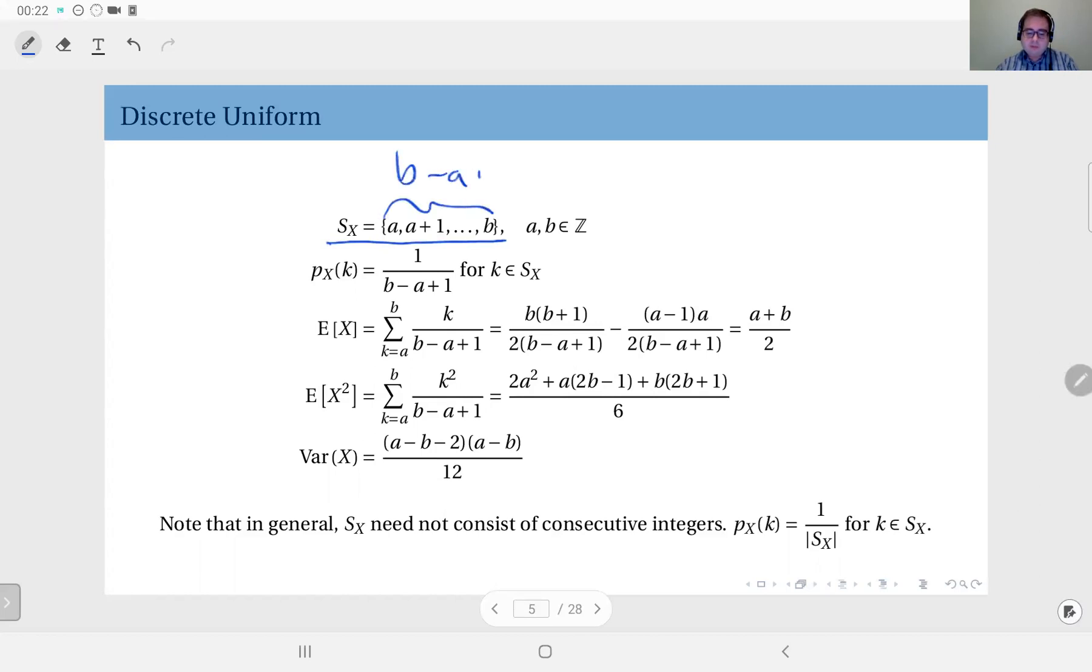B minus A plus 1 elements and each has the same probability, then that means the probability for each one is 1 over B minus A plus 1, so that the total probability is equal to 1.